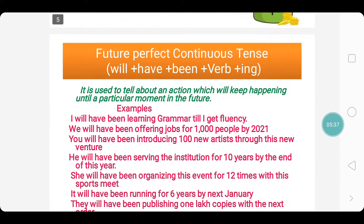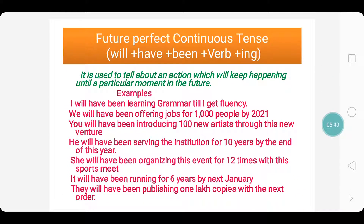Now we move on to Future Perfect Continuous Tense. It is used to tell about an action which will keep happening until a particular moment of time in the future. The verb form used here is will plus have plus been plus verb plus ing. Verb plus ing is the present participle form. Let's have a look at the examples. I will have been learning grammar till I get fluency.